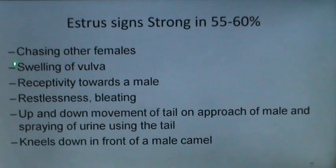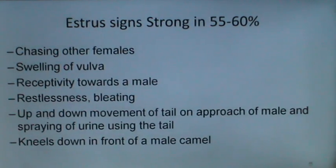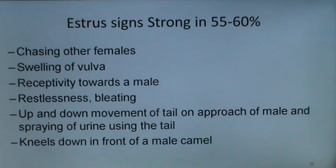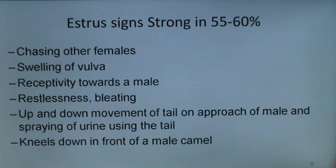Estrus signs are strong in 55 to 60% of camels and include chasing other females, swelling of the vulva, receptivity towards the male, restlessness, bleating, up-and-down movement of the tail on approach of a male, and spraying of urine using the tail. The camel kneels down in front of a male camel.